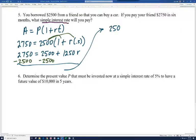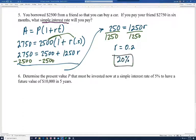And when we do that, we get 250 on the left and 1,250R on the right. So we're one step away. We just need to divide by 1,250 to get R by itself. And so R is going to be 0.2. Now remember, this is an interest rate, so it would be written as 20%.